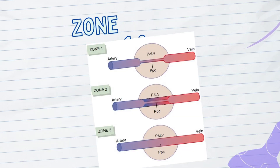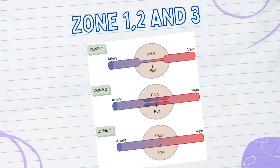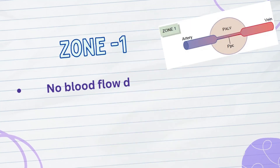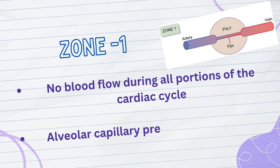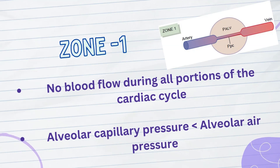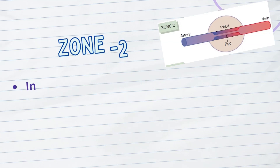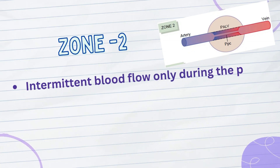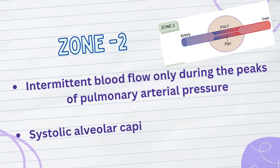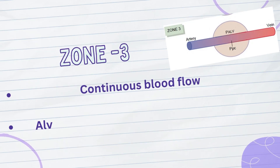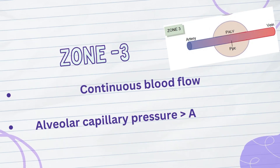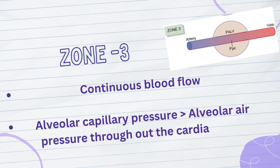Under different normal and pathological lung conditions, one may find any one of three possible zones or patterns of pulmonary blood flow. Zone 1: no blood flow during all portions of the cardiac cycle because the local alveolar capillary pressure in that area of the lung never rises higher than the alveolar air pressure during any part of the cardiac cycle. Zone 2: intermittent blood flow only during the peaks of pulmonary arterial pressure because the systolic pressure is then greater than the alveolar air pressure, but the diastolic pressure is less than the alveolar air pressure. Zone 3: continuous blood flow because the alveolar capillary pressure remains greater than alveolar air pressure during the entire cardiac cycle.